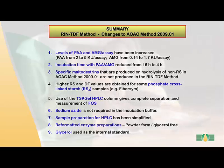Comparing the rapid integrated total dietary fiber method to AOAC method 2009.01: the incubation time has been reduced from 16 hours to 4 hours by increasing enzyme levels. Specific maltodextrins produced during hydrolysis in AOAC 2009.01 are not produced in the rapid integrated TDF method. Higher resistant starch and dietary fiber values are obtained for some phosphate cross-linked starches, particularly FibreSim. The TSK gel HPLC column gives complete separation of fructo-oligosaccharides. Sodium azide is not required because incubation times have been reduced. Enzymes have been reformatted in powder form and glycerol-free, and glycerol is used as the internal standard.